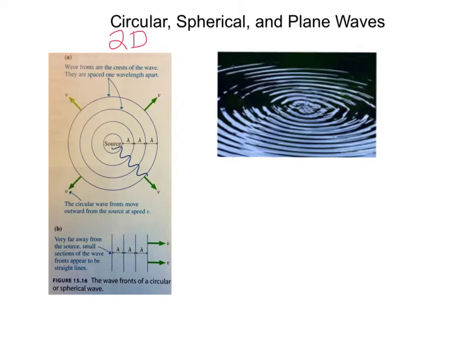Circular waves are two-dimensional. A lot of the waves that we pay attention to are spread out in three dimensions. Three-dimensional waves are called spherical waves. You can imagine them spreading out in kind of like these concentric spherical shells instead of concentric circles. And those shells then are separated by a wavelength.